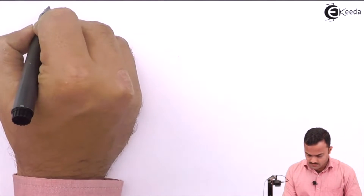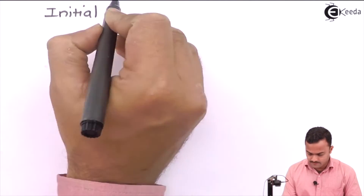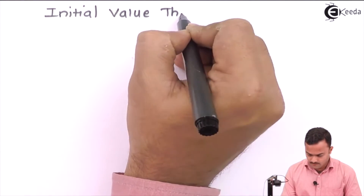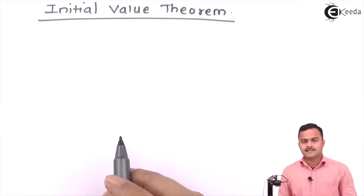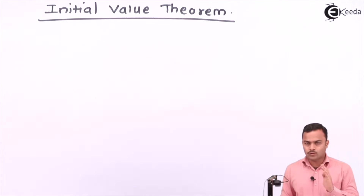Hi friends, in this video we are going to see initial and final value theorem in Z transform. First we will take initial value theorem. Sometimes it is necessary to find out what is the initial value of a signal or what is the final value of a signal. Even if you don't know the signal expression, by looking at the Z transform we can figure out what could be the initial or final value.